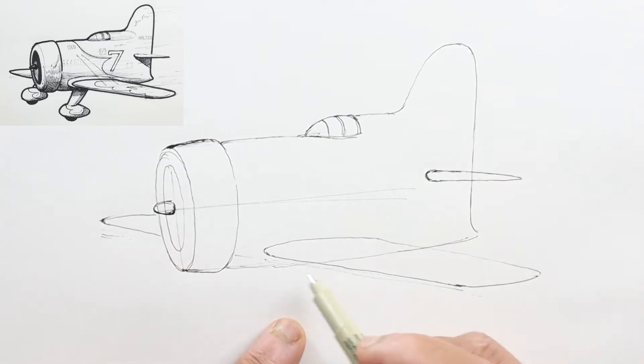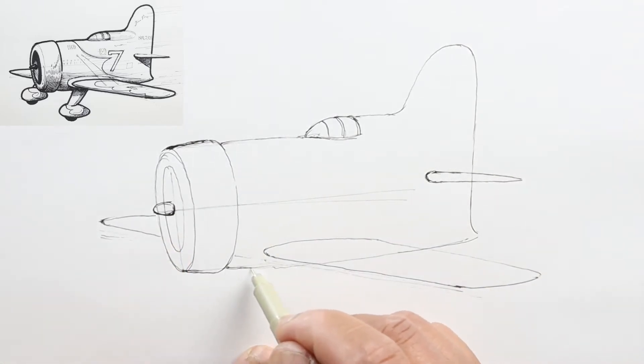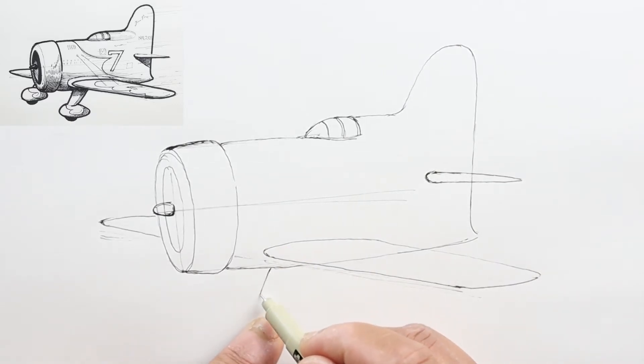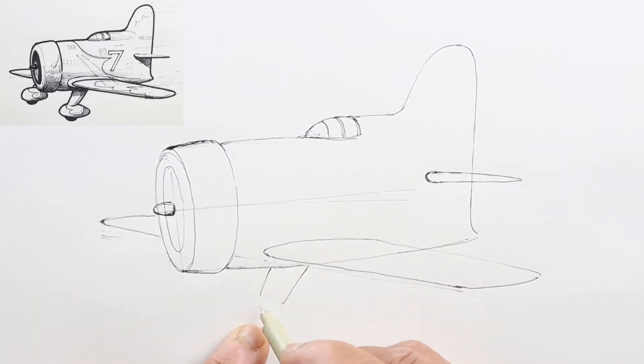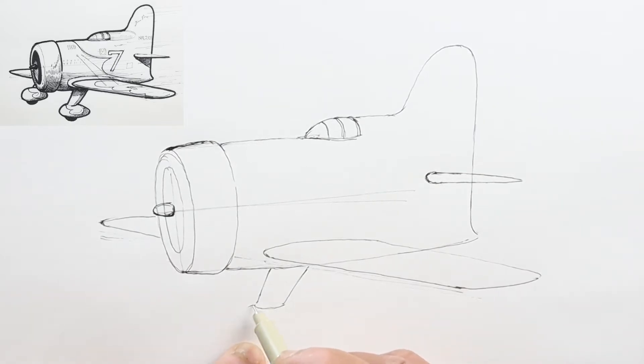Now we just need to draw the landing gear. Right underneath where the wing attaches to the body, we'll draw a couple lines going tilting forward and tapering together, and curve the far section to connect them.